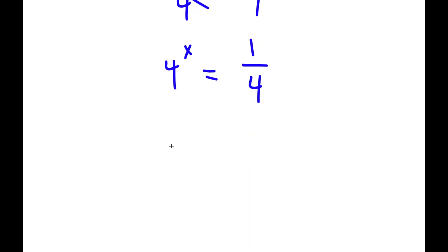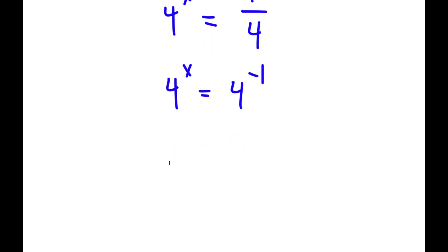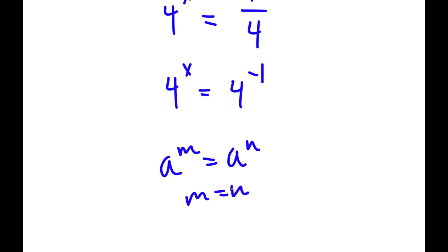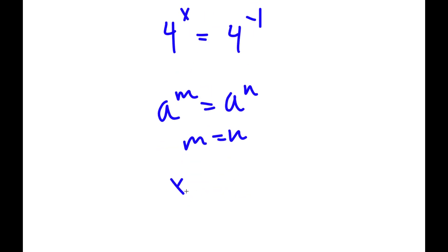Now, 1 over 4 is the same thing as 4 to the power of negative 1. And if I have something in the form a to the power of m equals a to the power of n, this means m equals n. So in this case, x is equal to negative 1.